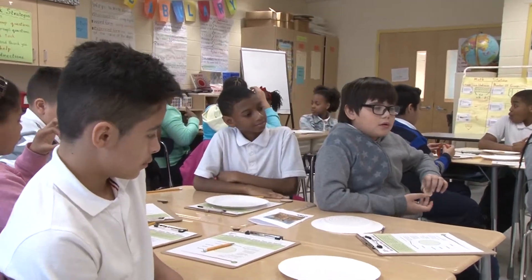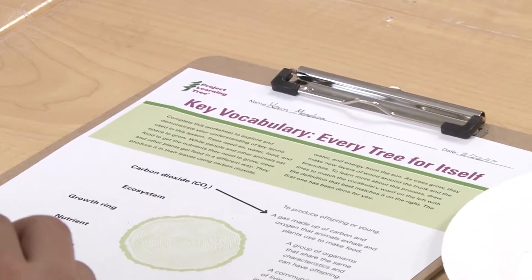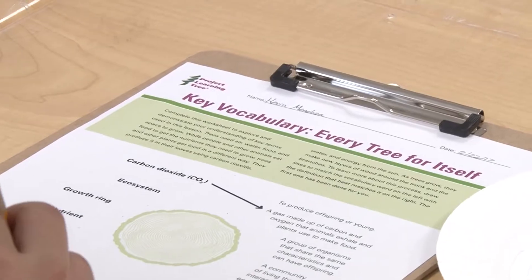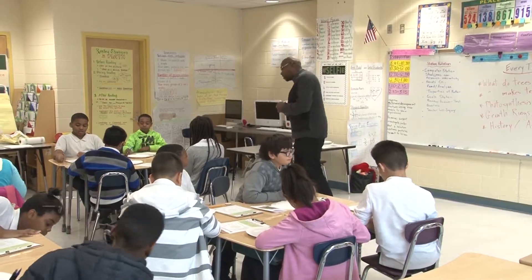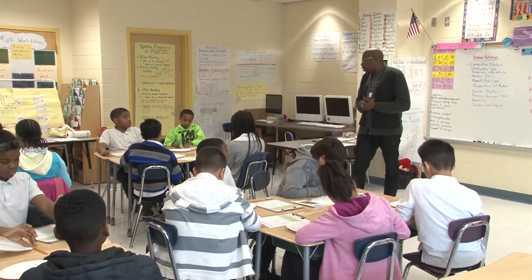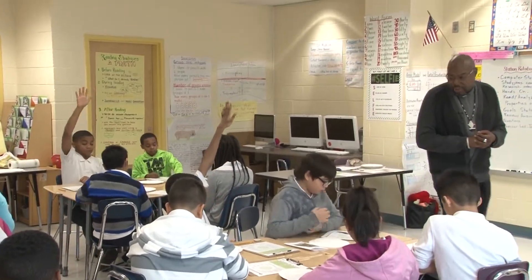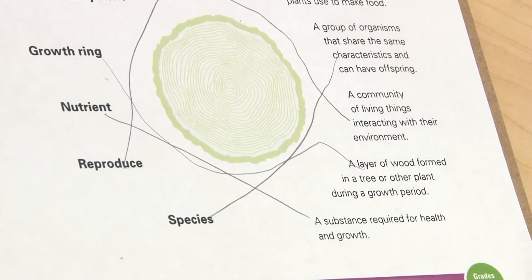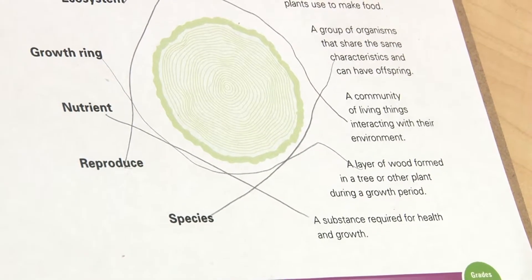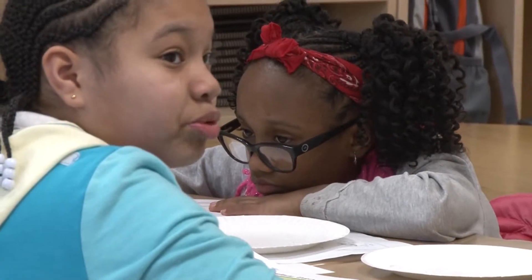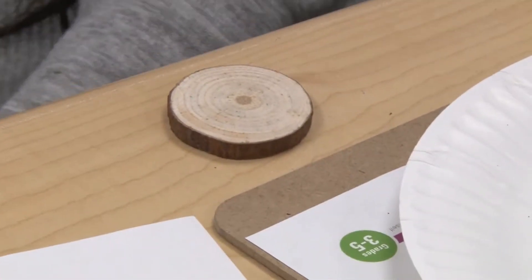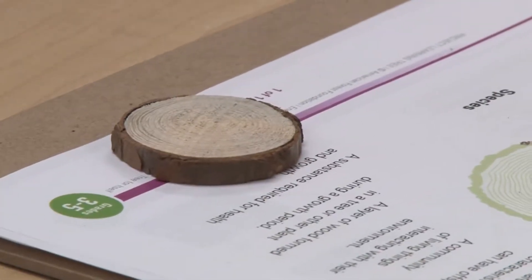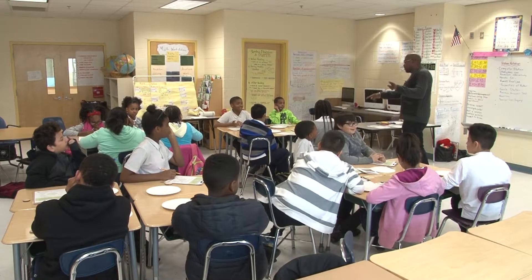Before we get to the actual activity where you get a chance to move around, I want to make sure we understand some key vocabulary. You have a sheet in front of you that says key vocabulary. A student defines species: a group of organisms that share the same characteristics and can have offspring. That's a very important concept — all trees don't need the same thing. Some trees need more sunlight; some trees need less water. That's the important concept about species.